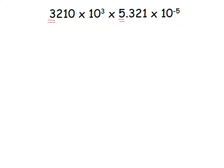So 3,210 can be written as 3 times 10 to the third, since it's approximately 3,000, and that was being multiplied by 10 to the third. This is approximately 5 times 10 to the negative 5. This allows us to keep track of the leading digits and get an approximate answer, and keep track of the powers of 10 to get the size right. We may need to fix it so the answer is a single leading digit, written in scientific notation or standard notation.